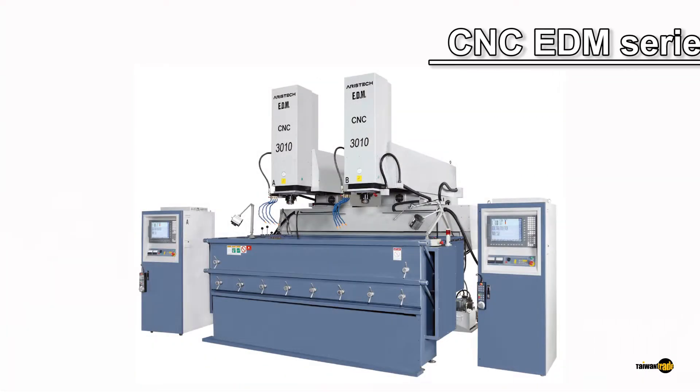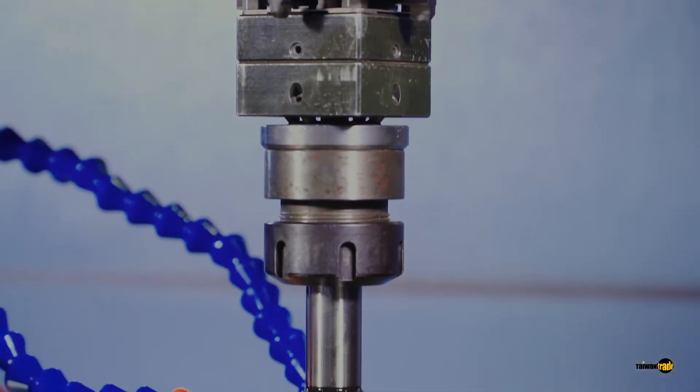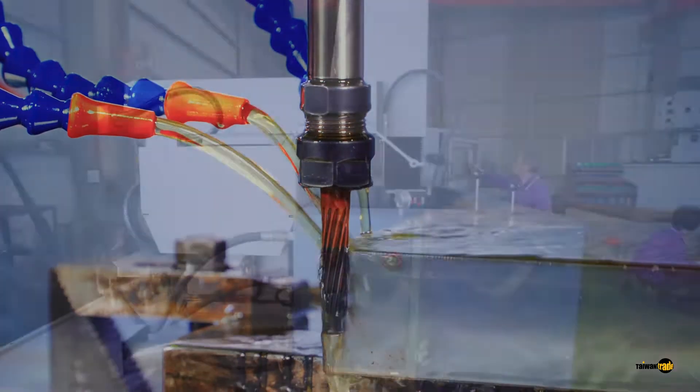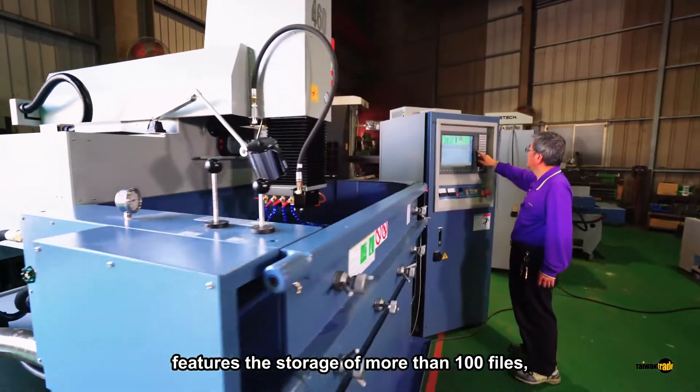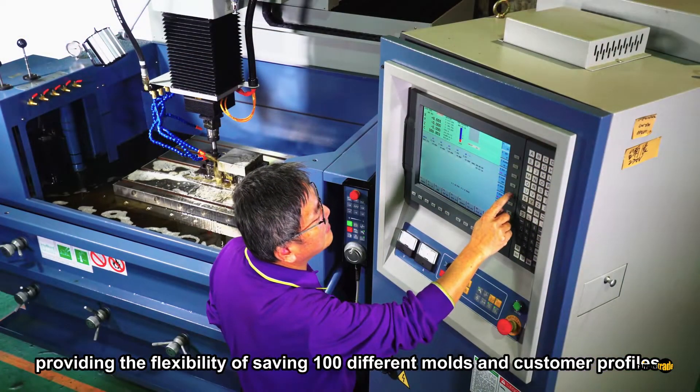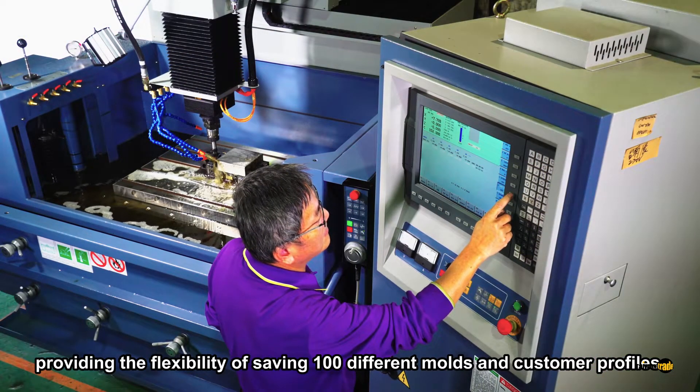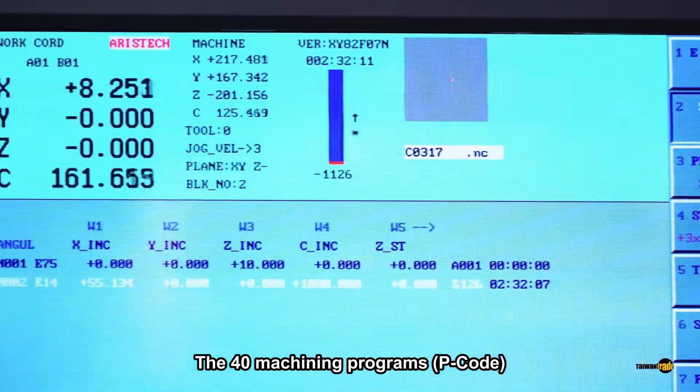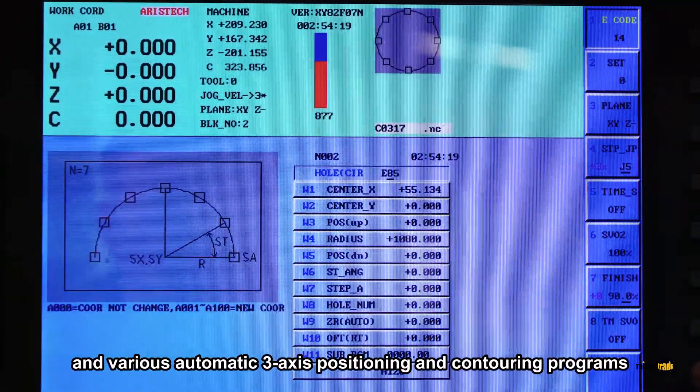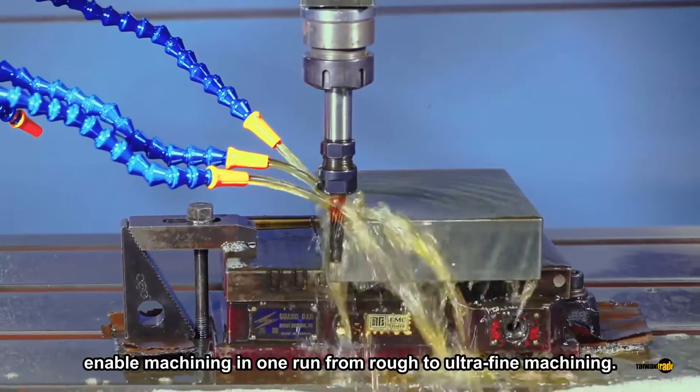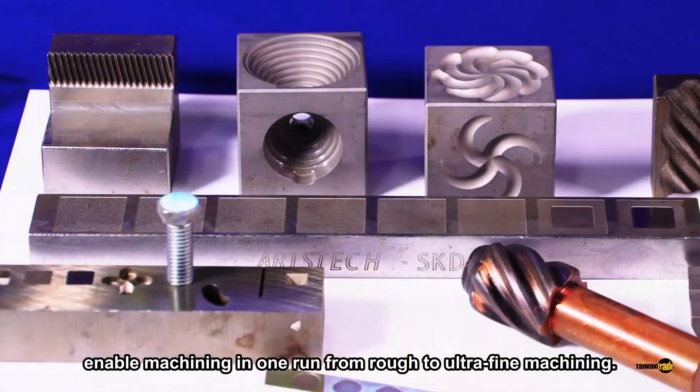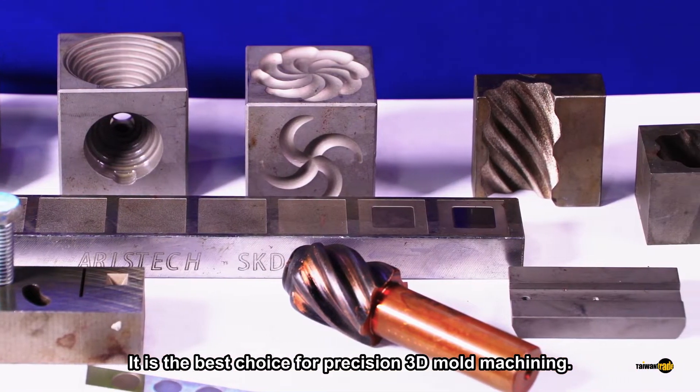The CNC EDM series features the storage of more than 100 files, providing the flexibility of saving 100 different molds and customer profiles. The 4D machining programs, P-code, and various automatic 3-axis positioning and contouring programs enable machining in one run from rough to ultra-fine machining. It's the best choice for precision 3D molding machining.